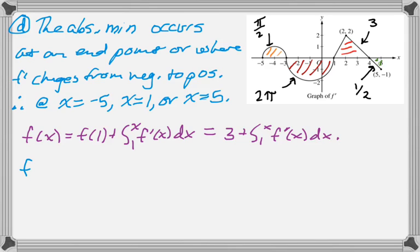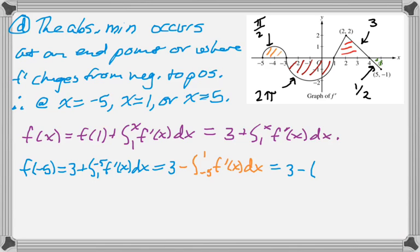So knowing that, now I can figure out my values. f of negative 5 is 3 plus the integral from 1 to negative 5 of f prime of x dx. I'm going to switch the bounds and change the sign. This allows me to go from left to right, which is what I would prefer to do. So it's 3 minus, the pi over 2 is above, so pi over 2. And then the 2 pi is below, so that will be minus 2 pi. If you work that out, that ends up being 3 plus 2 pi minus pi over 2, so that's a lot bigger than 3.